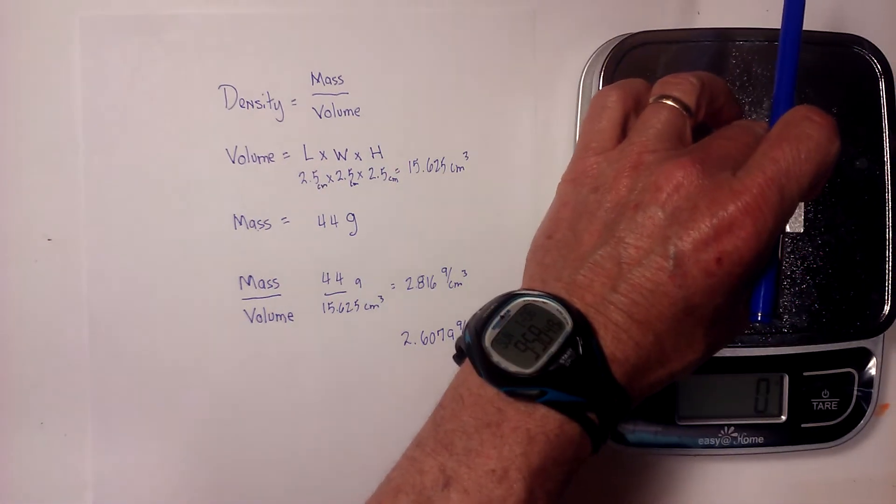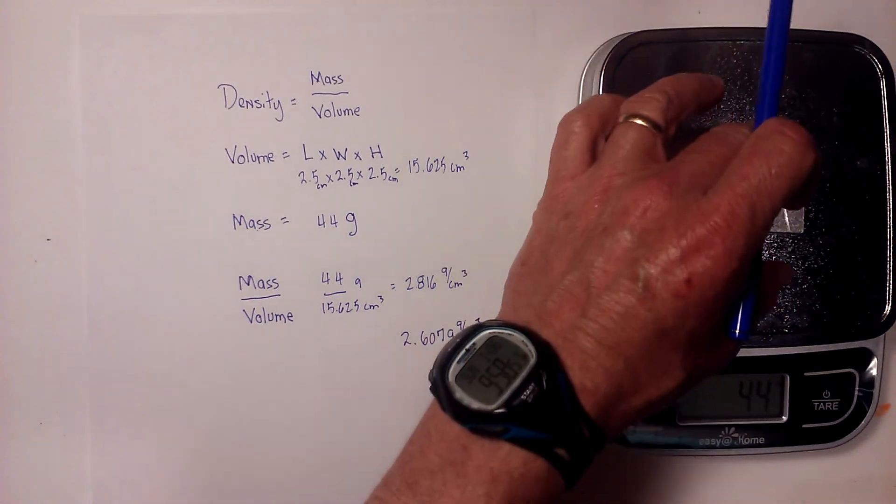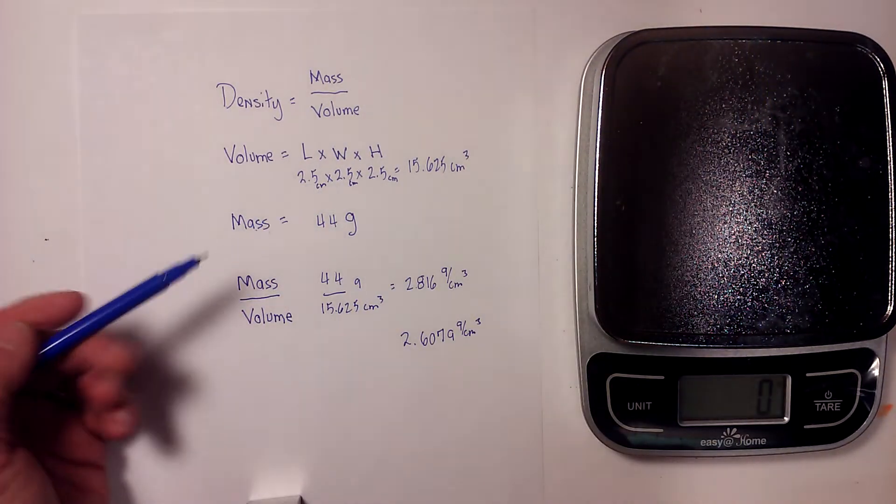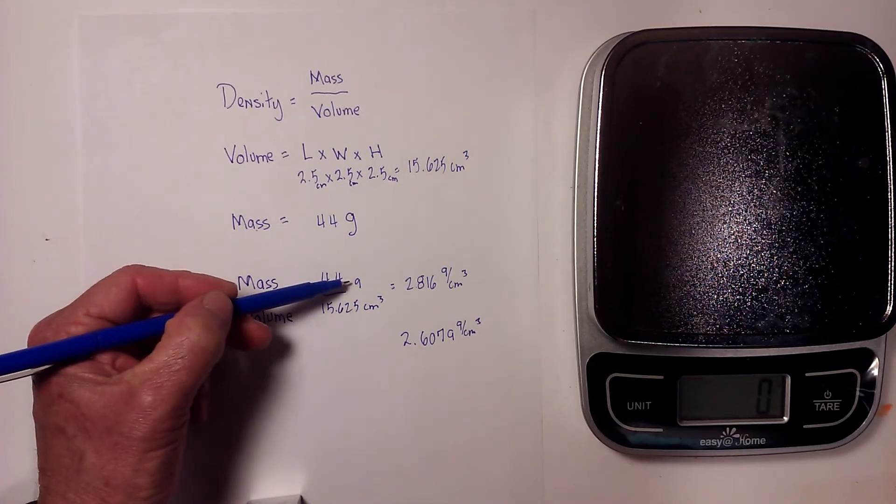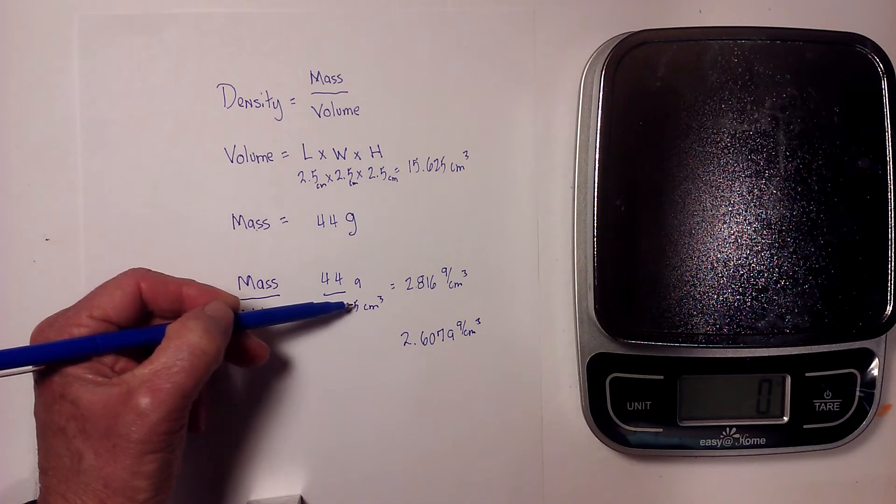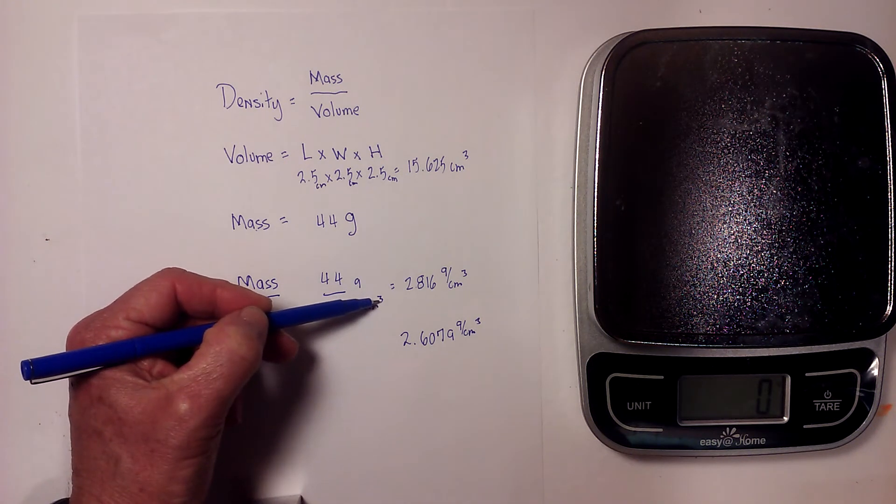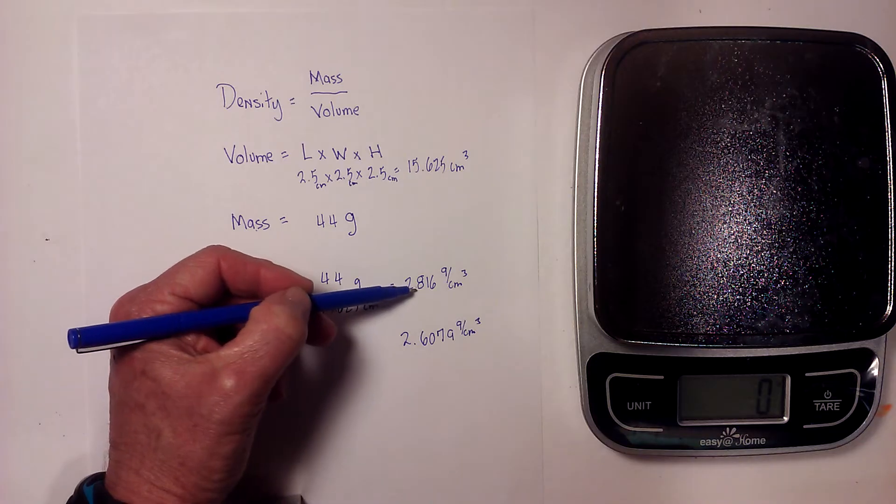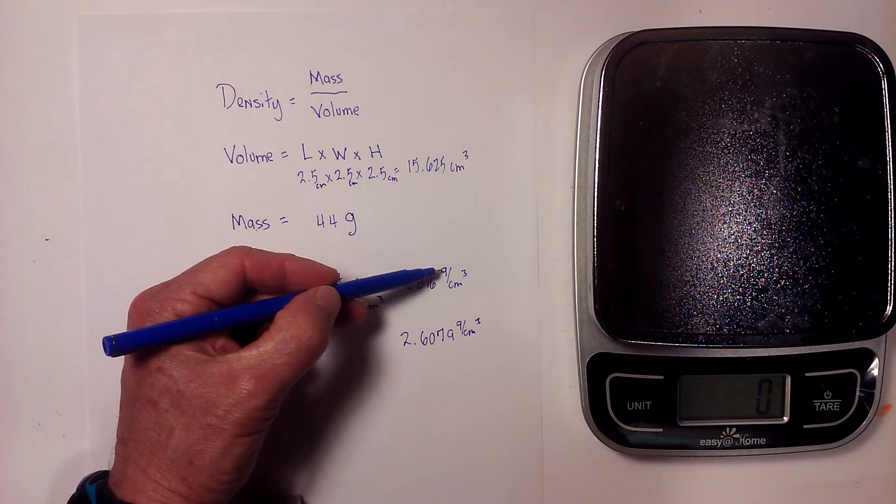Again I placed this on here to get the mass, and it looks like it is 44 grams. So then I just take 44 grams divided by 15.625, and remember the volume is cubed, and that gives me 2.816 grams per centimeters cubed.